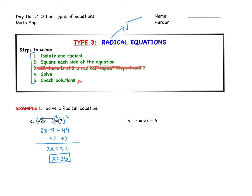We are not finished. In order to finish this problem, we need to plug that answer back in to the very original equation. You do need to show the work for this — on the homework I want to see all the work written out that you checked your answers. So we get the square root of 2 times 26 minus 3 is equal to 7. Similar to absolute value, you cannot manipulate the equation at all — simplify the left, simplify the right, see if they're equal. This becomes the square root of 52 minus 3, or the square root of 49, which equals 7. So 7 equals 7 — this answer checks out. For every radical equation in your homework, I'm going to expect to see work that you checked your answer.